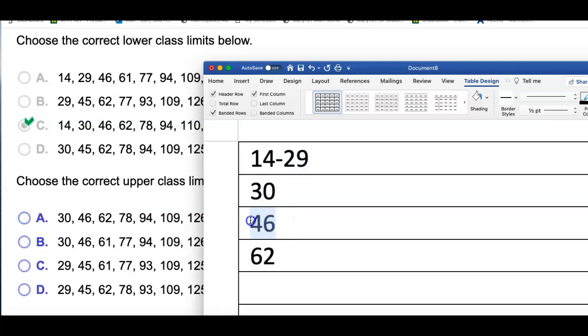The next lower class limit is 46, so this one will go up to 1 less than 46, which is 45. Next number is 62, so I want the next number to be 61 and so on.